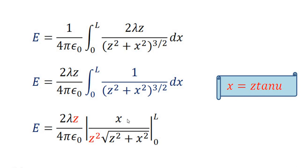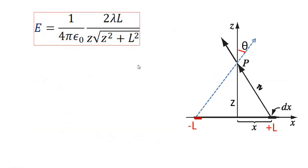Applying the limits: the upper limit gives x = L, and the lower limit term is 0. After substitution and simplification, z² cancels, giving the final result: E = (1 / 4 pi epsilon_0) × (2 lambda L) / (z × sqrt(z² + L²)).